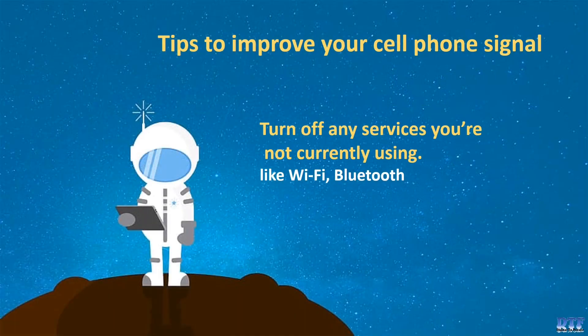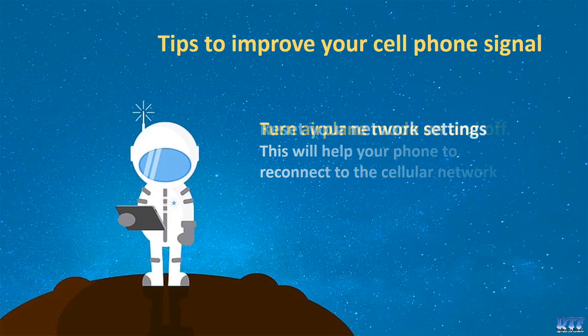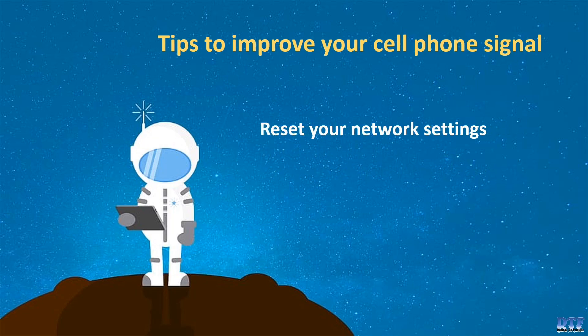Tips to improve your cell phone signal: Turn off any services you are not currently using, like Wi-Fi and Bluetooth. Turn airplane mode on and off — this will help your phone reconnect to the cellular network. Reset your network settings, and keep your software updated.